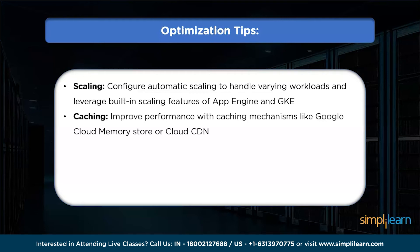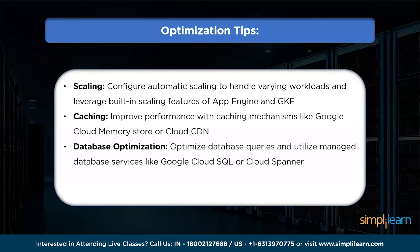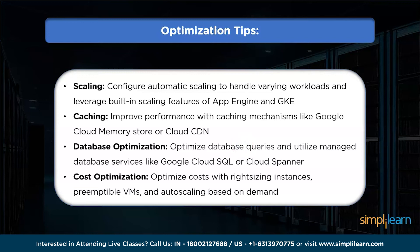Next is database optimization — if your Java application relies on a database, consider using Google Cloud SQL or Google Cloud Spanner for managed and scalable database services. Optimize database queries, use indexes effectively, and consider data sharding technologies to distribute data and improve performance. Finally, for cost optimization, utilize Google Cloud's cost optimization features such as right-sizing instances and leveraging auto scaling to optimize costs based on actual demand.